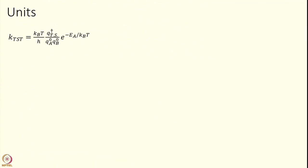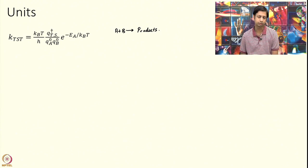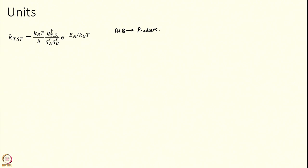Let us look at some properties of what we have derived. First, let us look at what the units are. We have made a special case where this relation holds only for a bimolecular reaction — if you have more reactants you just change the denominator. But let us stick to bimolecular for a little while, and I want to understand what the unit of the rate constant is — just a sanity check.